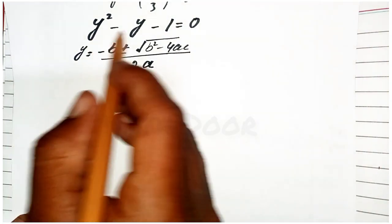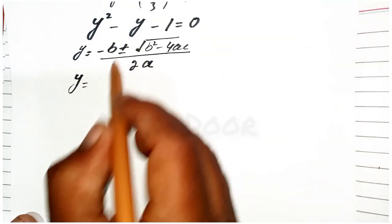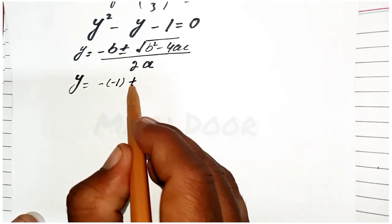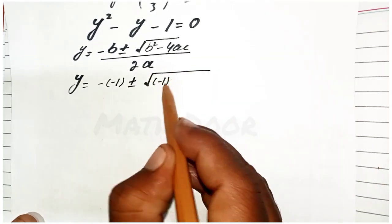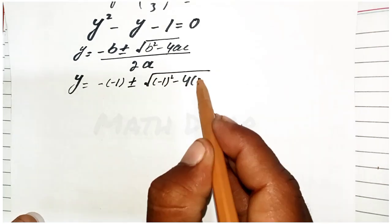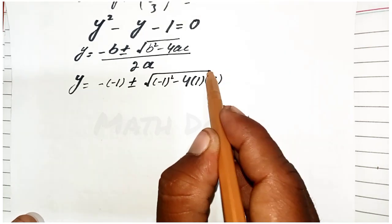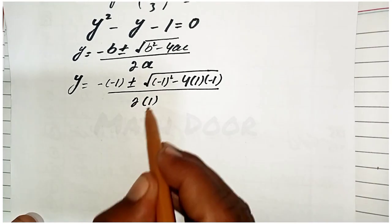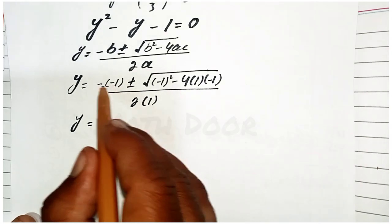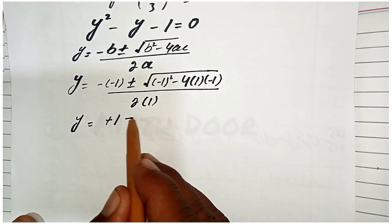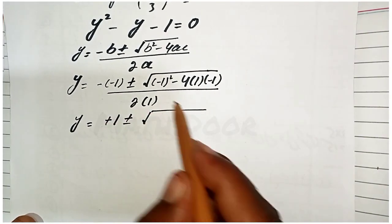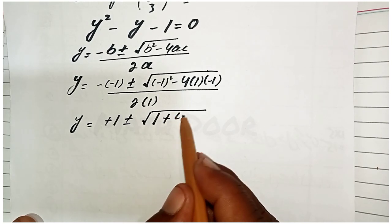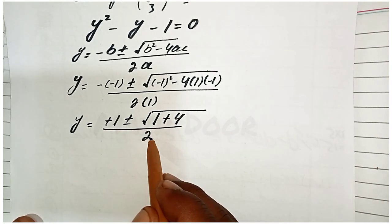Substituting values — a = 1, b = −1, c = −1 — we get: y equals minus(−1) plus or minus square root of ((-1)² minus 4·1·(−1)), over 2·1. The negatives simplify: 1 plus or minus square root of (1 plus 4), over 2.